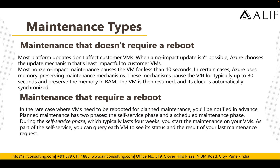The second maintenance type is maintenance that requires a reboot. In rare cases where VMs need to be rebooted for planned maintenance, customers are notified in advance. Planned maintenance has two phases: the first self-service phase, and the second scheduled maintenance phase. During the self-service phase, which typically lasts four weeks, customers can start maintenance on their VMs and query each VM to see the status and result of the last maintenance request.